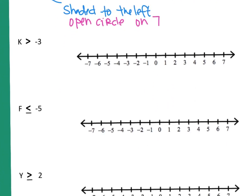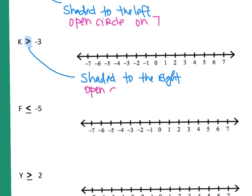The next one — I look at my symbol and it says greater than. Because it says greater than, I'm going to shade to the right, since larger numbers go to the right. Because it's only greater than, I would do an open circle on negative 3. Draw the open circle, then shade to the right and put an arrow on the end to show it keeps going forever in that direction.